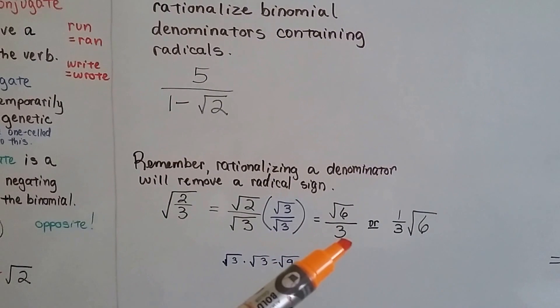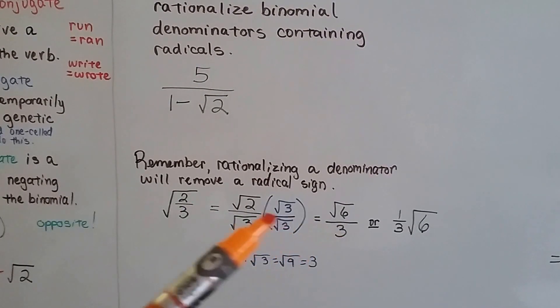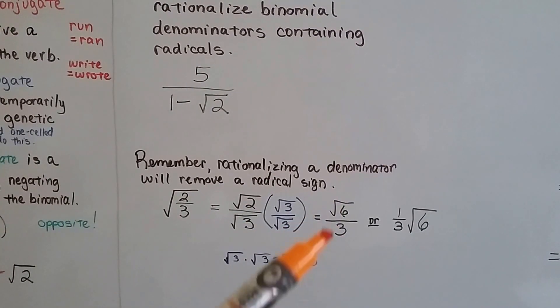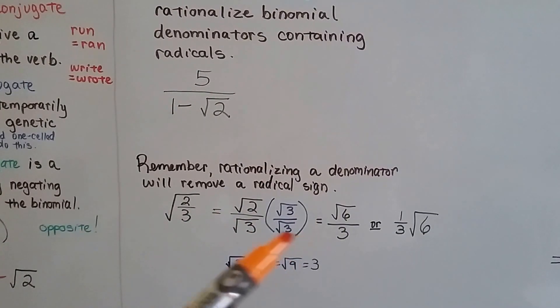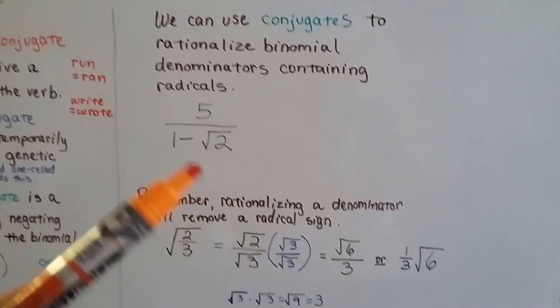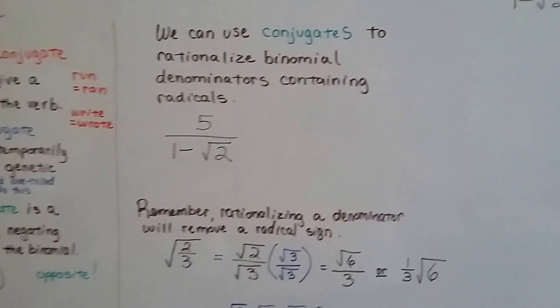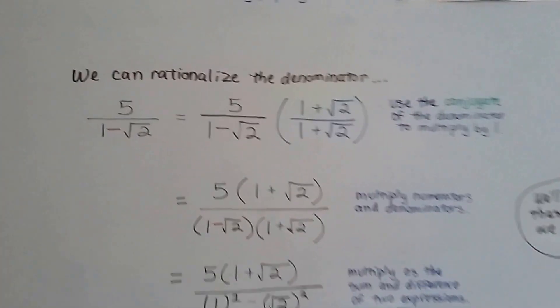Well, that pulled the radical sign off of these and made it just a 3. And then, of course, the numerator stays as square root of 6. So that was rationalizing the denominator and we removed the radical sign. We could do the same thing with binomial denominators. Okay? So we can rationalize the denominator.